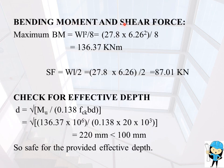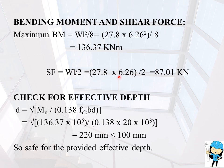For bending moment and shear force, loads are taken as uniformly distributed. Maximum bending moment equals WL² divided by 8, so 27.84 into 6.26² divided by 8, which gives 136.37 kN·m. Shear force equals WL by 2, so 27.84 into 6.26 divided by 2, giving a shear force of 87.01 kN.